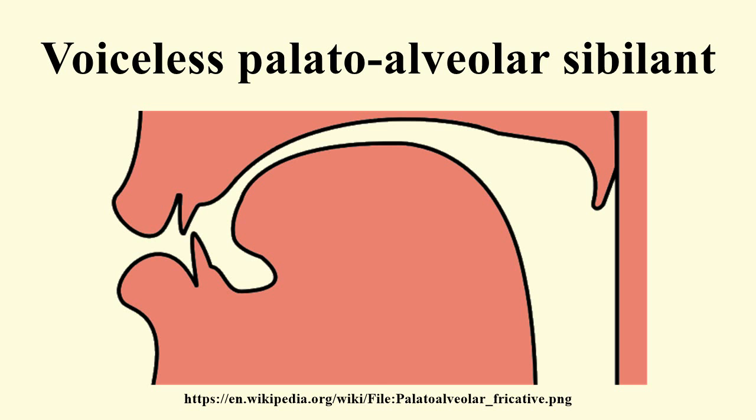Its phonation is voiceless, which means it is produced without vibrations of the vocal cords. In some languages the vocal cords are actively separated, so it is always voiceless; in others the cords are lax, so that it may take on the voicing of adjacent sounds. It is an oral consonant, which means air is allowed to escape through the mouth only. It is a central consonant, produced by directing the air stream along the center of the tongue rather than to the sides. The airstream mechanism is pulmonic, meaning it is articulated by pushing air solely with the lungs and diaphragm, as in most sounds.